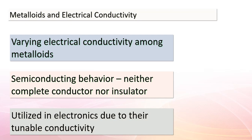Let's dive deeper into the intriguing world of metalloids and their electrical conductivity. Metalloids exhibit properties that sit between metals and non-metals. When it comes to electrical conductivity, metalloids don't fit neatly into the conductor or insulator categories — instead, they demonstrate a unique property known as semiconductivity. This means they can conduct electricity to a certain extent, making them incredibly useful for electronics. Metalloids like silicon, germanium, and arsenic are excellent examples, with their tunable conductivity being a key factor in the design and function of many electronic devices.